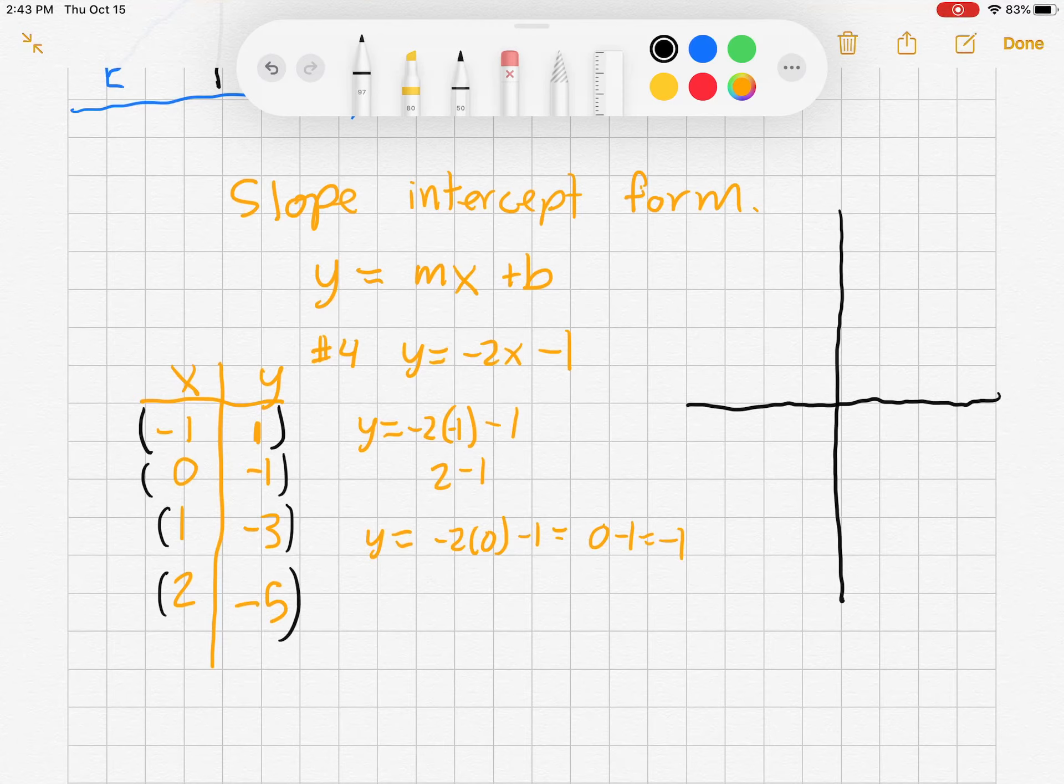We have negative 1, 1, 0, negative 1, 1, negative 3, and 2, negative 5. We graph our line. That has a negative slope. So there's our line.